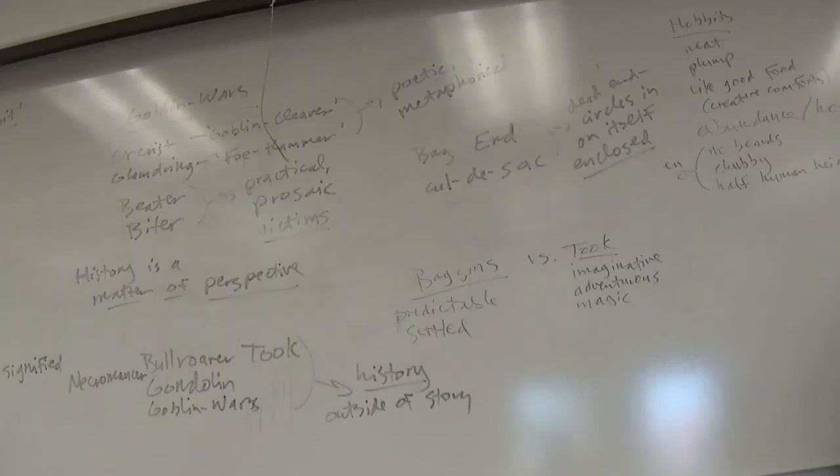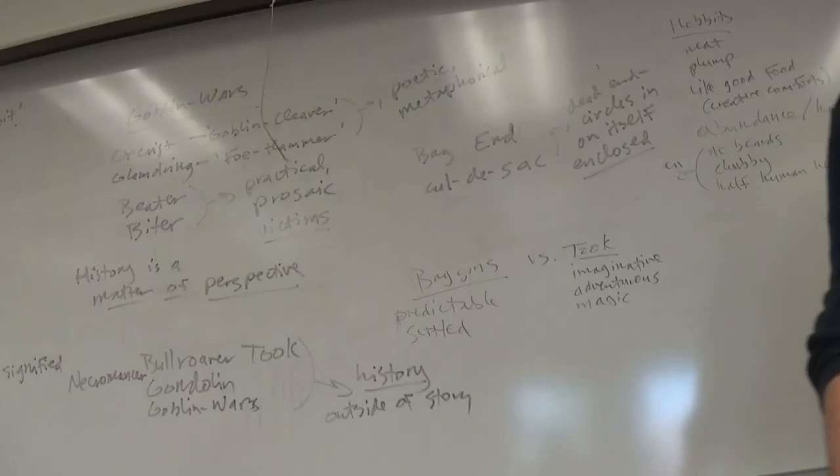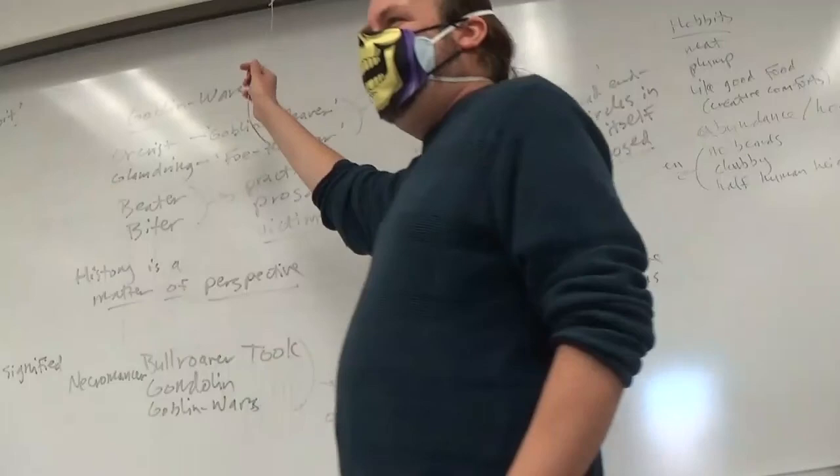Now we can see a similar relationship described when the elven king captures the dwarves. If you look on page 168: 'The king's cave was his palace and the strong place of his treasure and the fortress of his people against their enemies. It was also the dungeon of his prisoners. In ancient days they had had wars with some of the dwarves, and they accused them of stealing their treasure. It is only fair to say that the dwarves gave a different account, and said that they only took what was their due, for the elf king had bargained with them to shape his raw gold and silver and had afterwards refused to give them their pay.' So one other thing that makes the history convincing in the Hobbit, even for a book that's written essentially for eighth graders, the history is convincing in part because it's a matter of perspective. While there may be agreement on the basic shape of events, different groups view those events through different prisms. Which indicates a level of complexity that in particular Bilbo Baggins' neighborhood of cozy little kind of rural suburban hobbits doesn't really have.